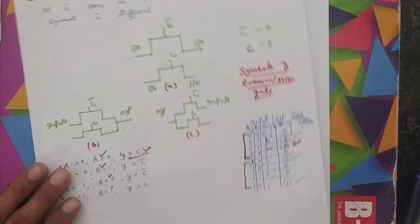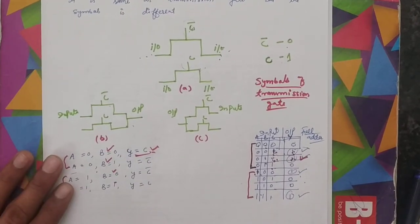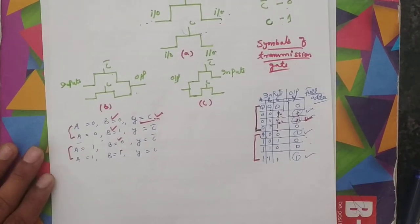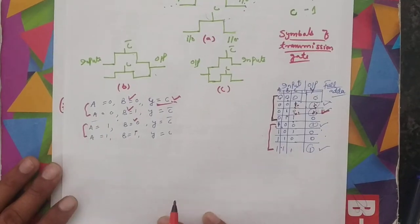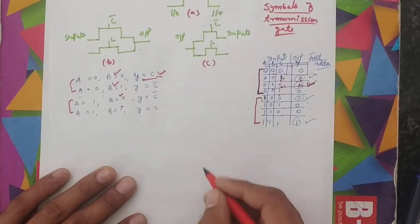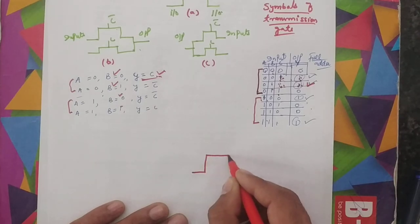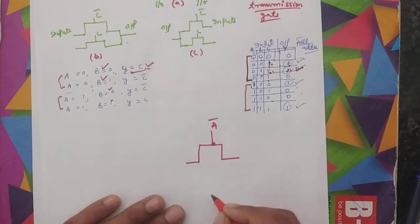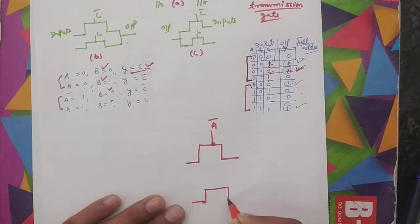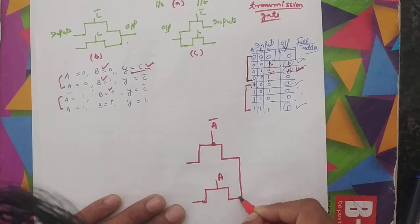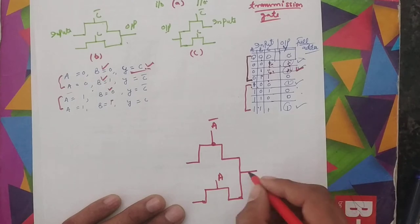This type of circuit you will design in Cadence using P and N transistors. First, take this symbol. For A: when A is 0, we use a P-MOS with A complement as control, and when A is 1, we take an N-MOS with A as control. When A is 0 it enables the P-MOS, and combining both, we take the output from here.